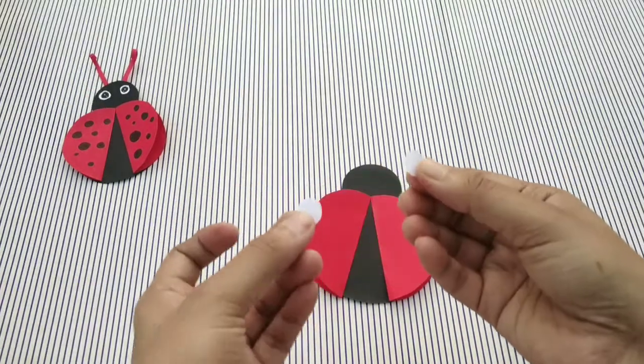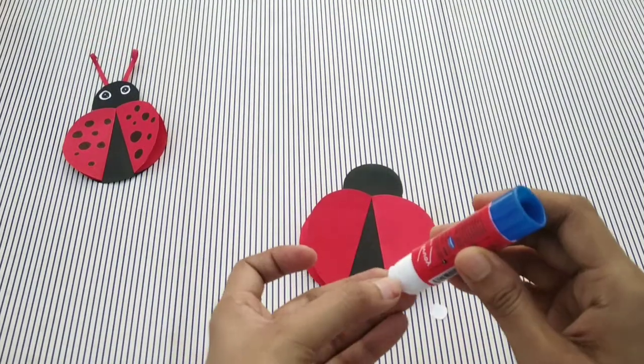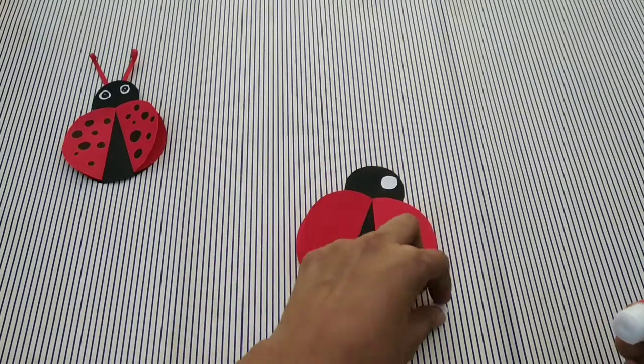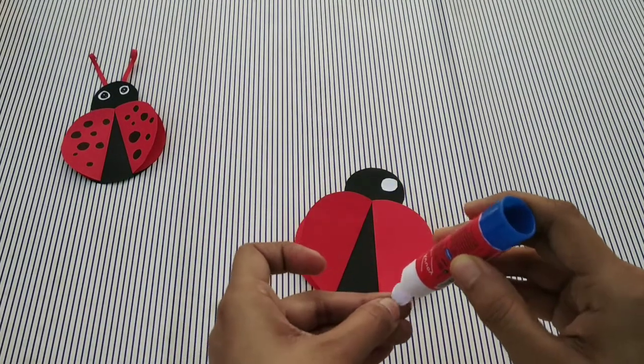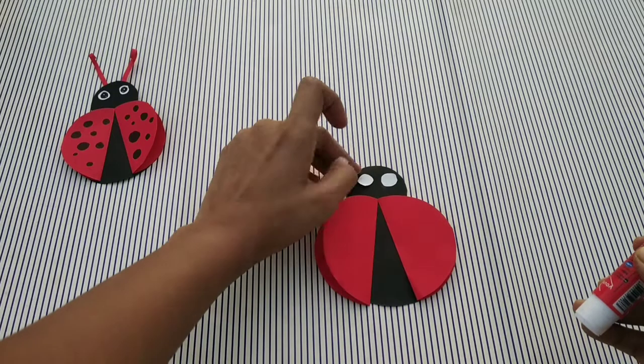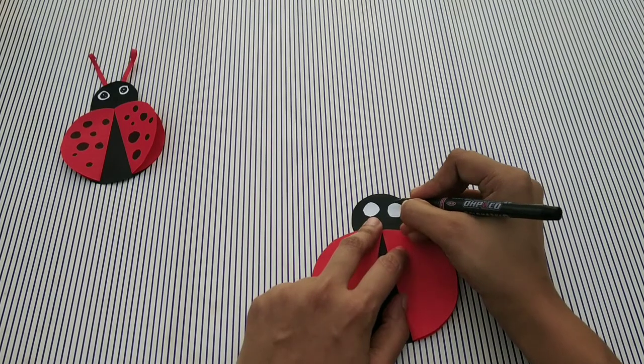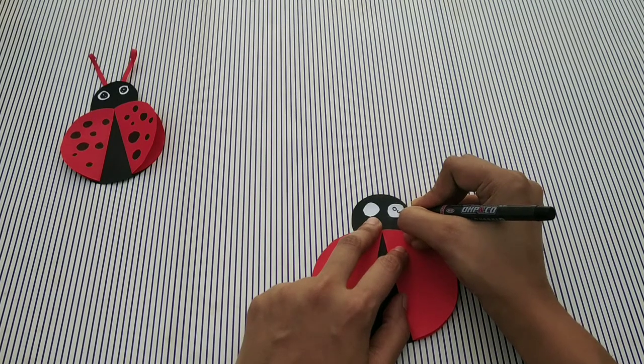Now we have to make the eyes of a bug, so we need small white circles and we will stick them on the head of the bug. Now we have to use a marker for making the eyes of the bug.